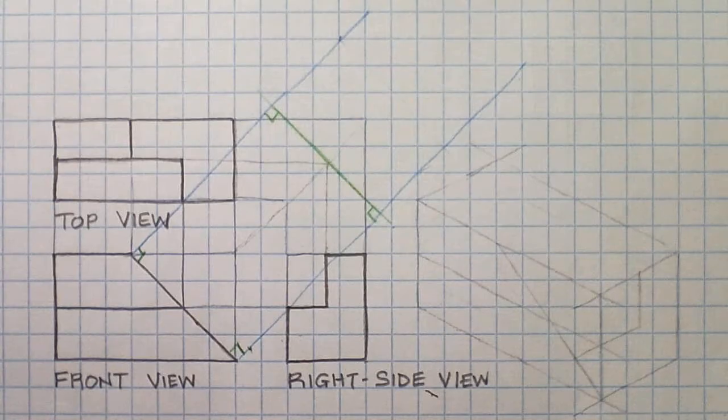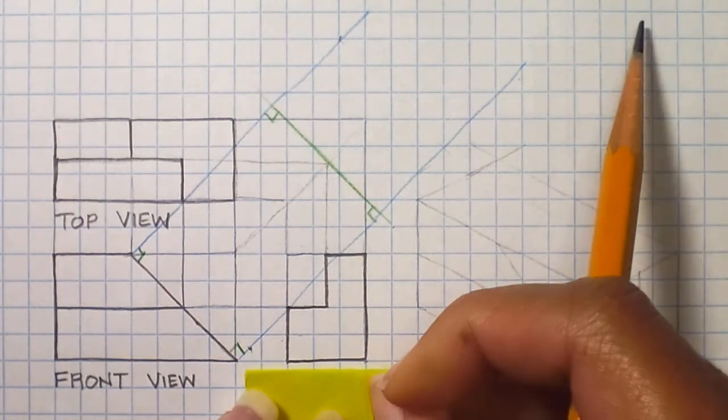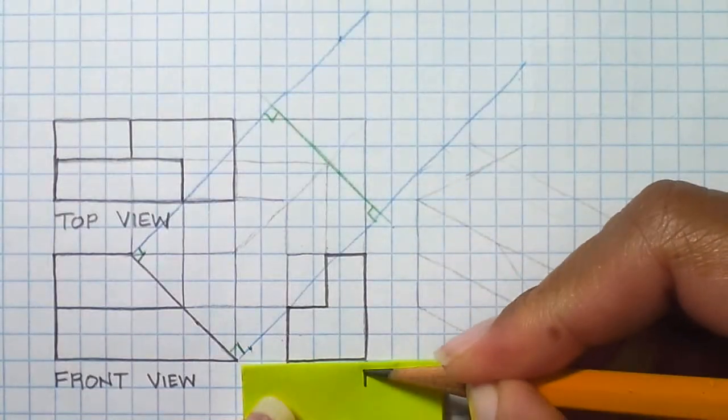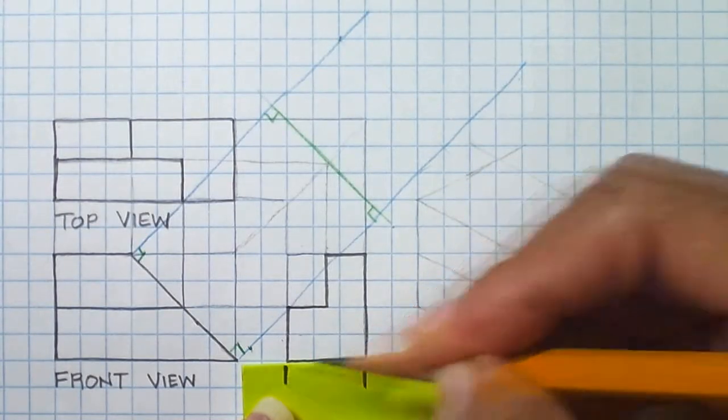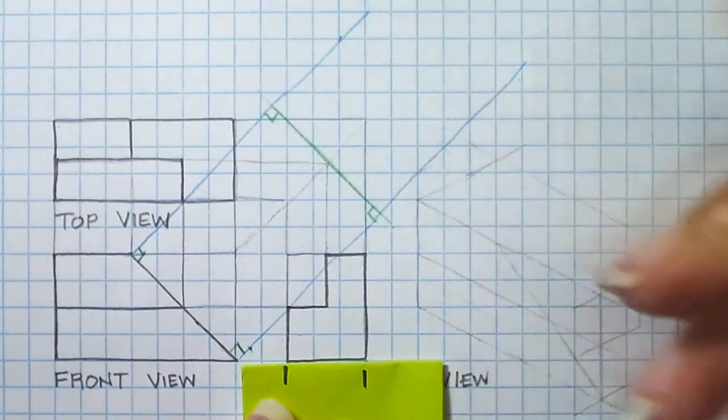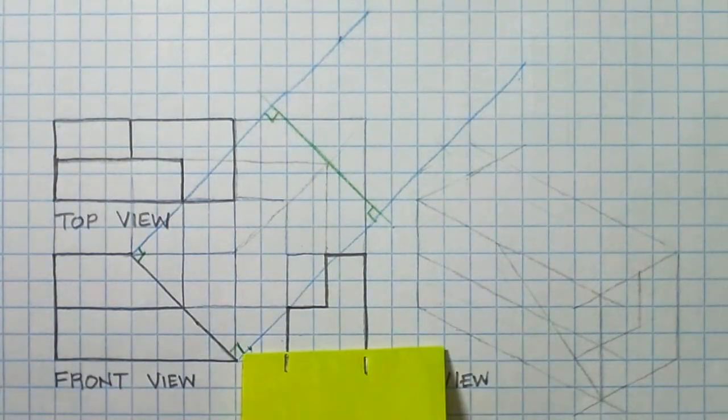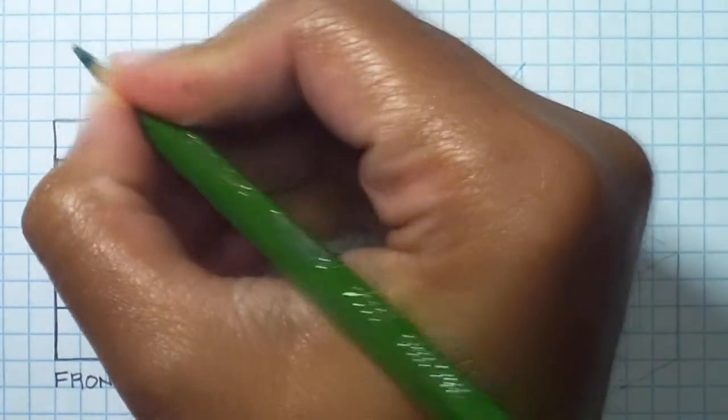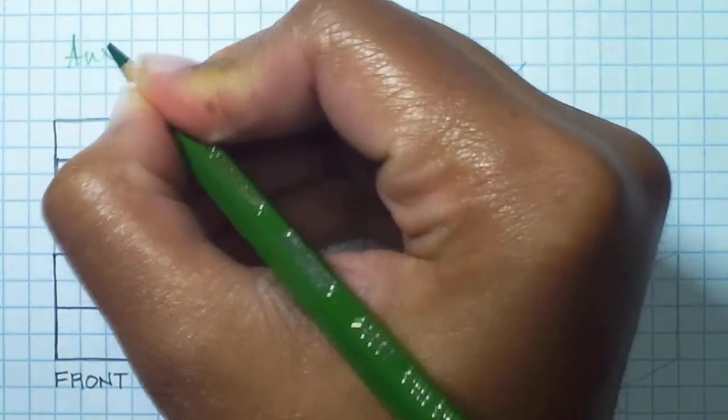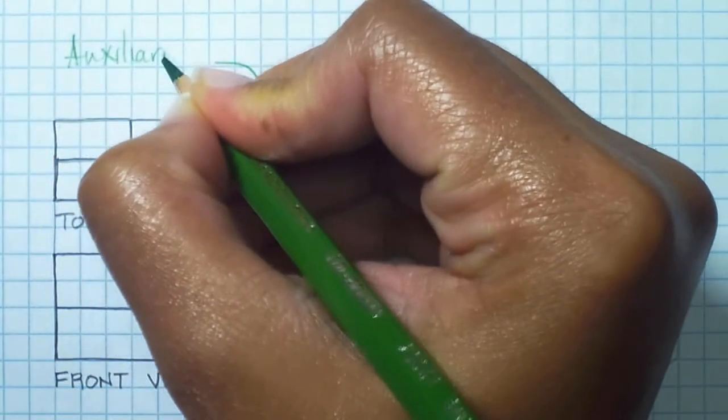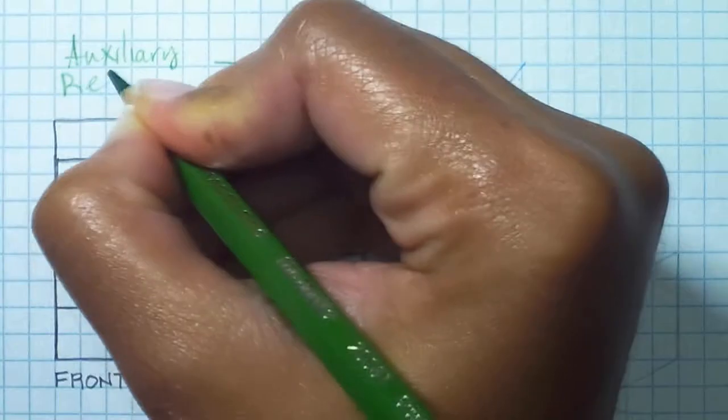So I'm going to take my sheet of paper and I'm going to transfer the depth from my right side view to my auxiliary. Again, this is my auxiliary reference